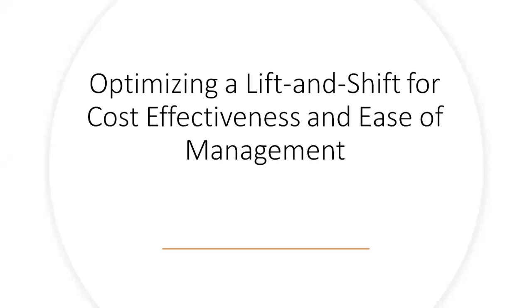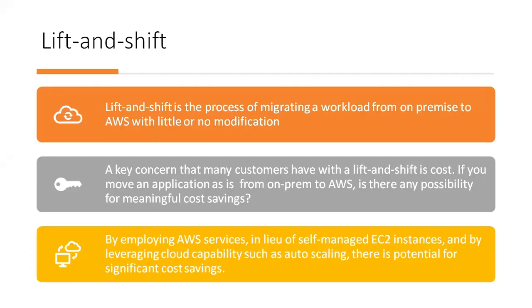Optimizing a lift and shift for cost-effectiveness and ease of management. Lift and shift is a process of migrating a workload from on-premise to AWS with little or no modification. It is a common route for enterprises to move to the cloud and can be a transitionary state to a more cloud-native approach.